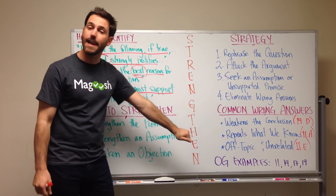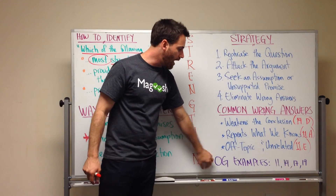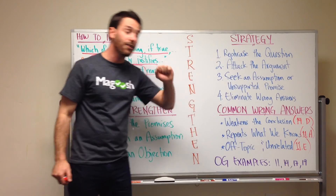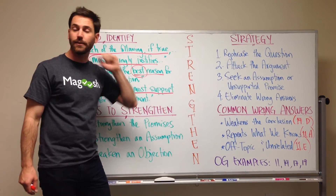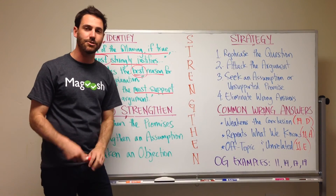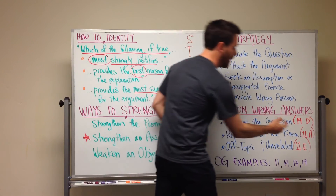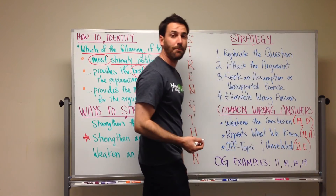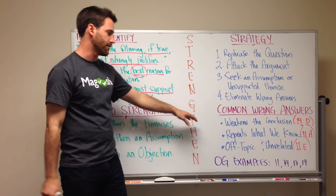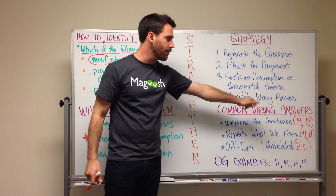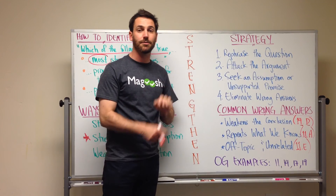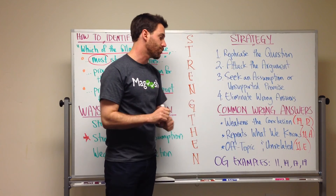There are some examples in the Official Guide that you can look at. Questions 11, 14, 17, and 19 in the 13th edition are all strengthening questions, so you can go do some practice. I've listed the question number and the answer choice that demonstrates each common wrong answer. For example, if you look at question 14, answer choice D, you'll be able to see what one of these common traps looks like.